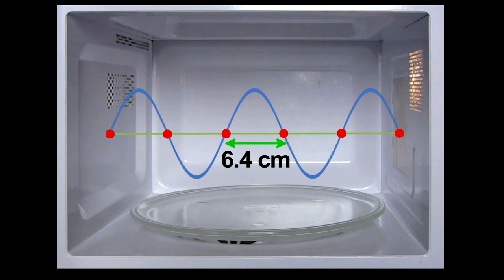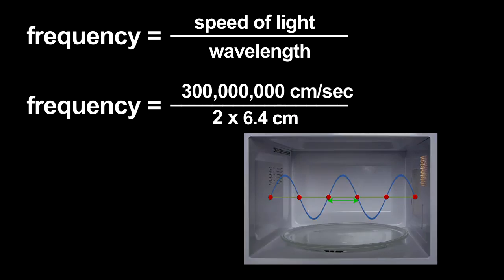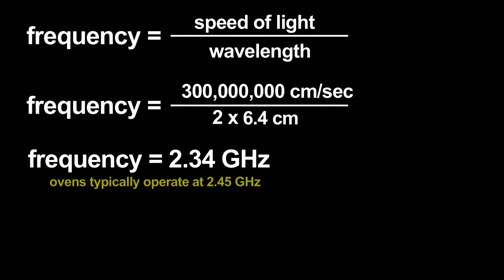Using that wavelength, I can estimate the microwave radiation's frequency. The frequency is related to the wavelength by the speed of light. I get an answer that only has a four or five percent error. Not bad for this primitive measurement.